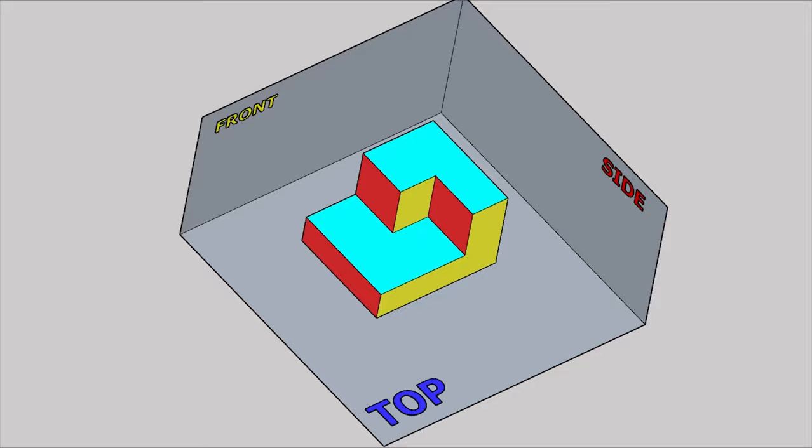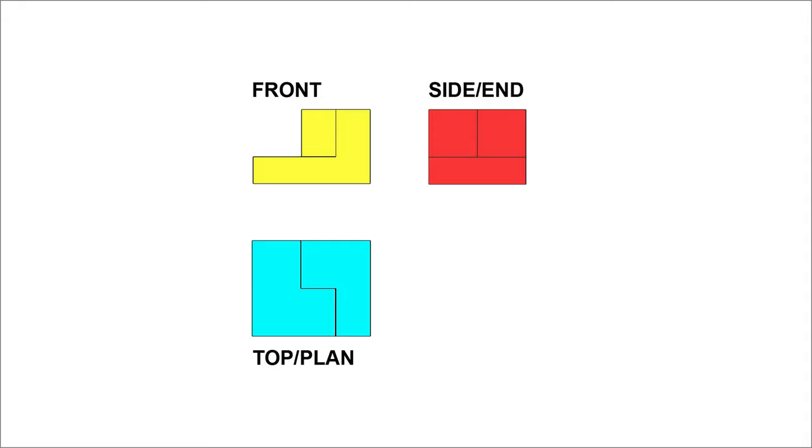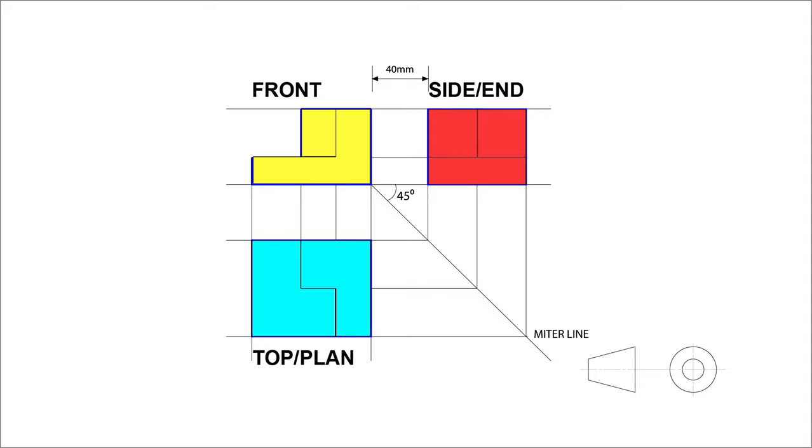The end elevation is drawn on the right of the front and the plan elevation is drawn underneath the front. This is how first angle orthographic projection looks like.